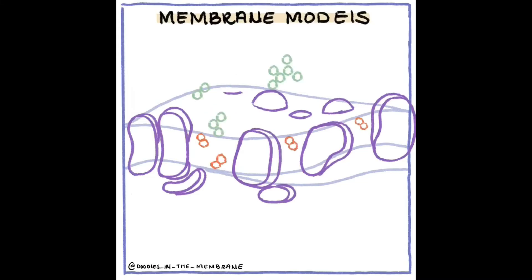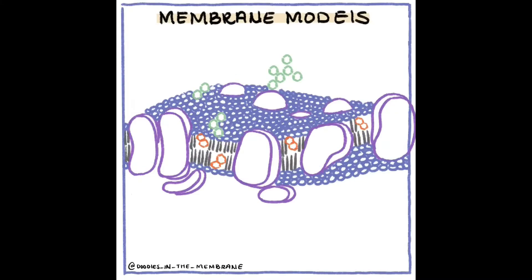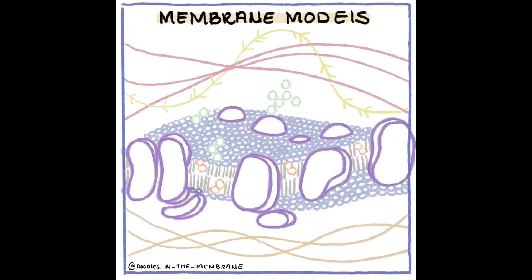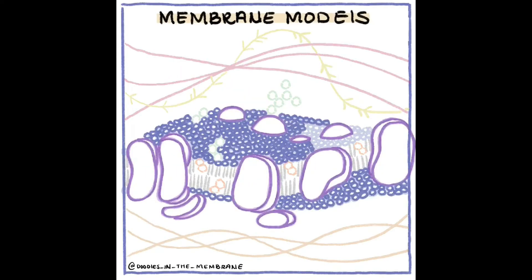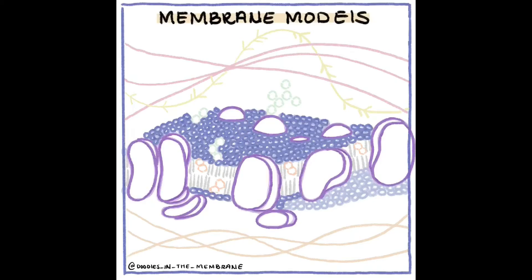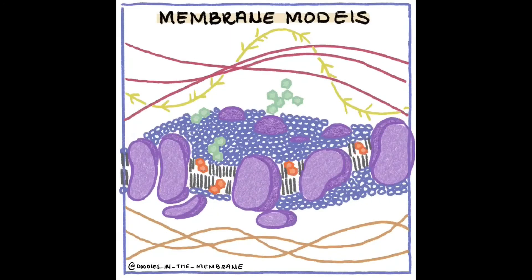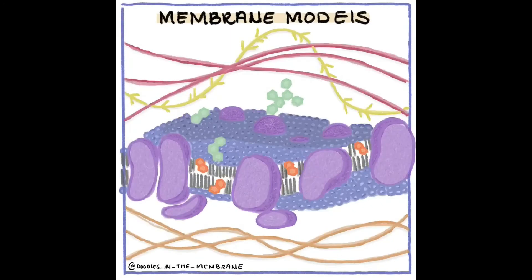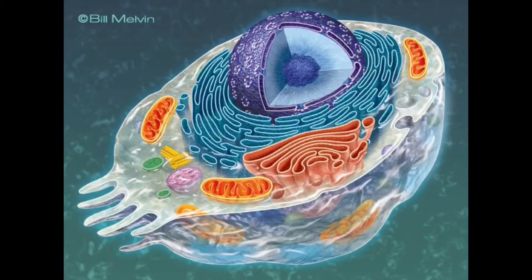The nucleolus ultrastructure can be seen through an electron microscope, while the organization and dynamics can be studied through fluorescent protein tagging and fluorescent recovery after photobleaching. Antibodies against the PAF-49 protein can also be used as a marker for the nucleolus in immunofluorescence experiments.